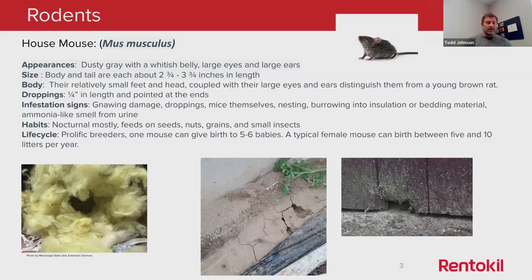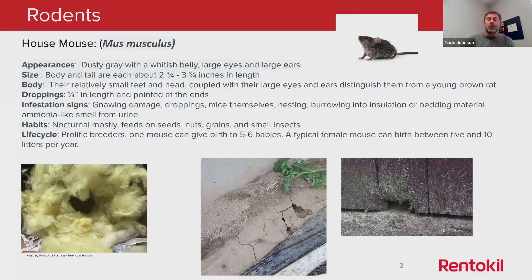Gnawing damage is another sign. They like to gnaw their way into a hiding area or into where they're going to be feeding. If you look at the picture on the lower right, you'll see a hole where a mouse gnawed through a door and got inside. Another sign could be burrowing — one picture shows mouse burrowing into the ground near a greenhouse, and they can also burrow into insulation. Finding holes around your building could indicate mouse nesting.